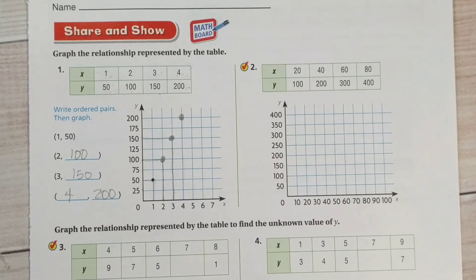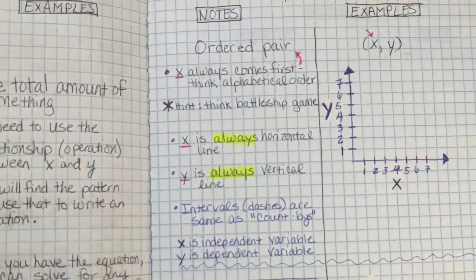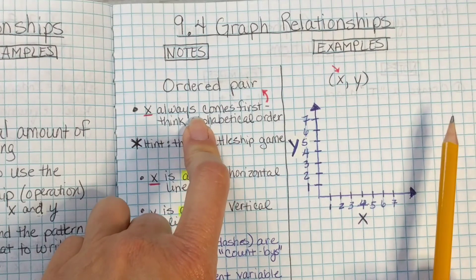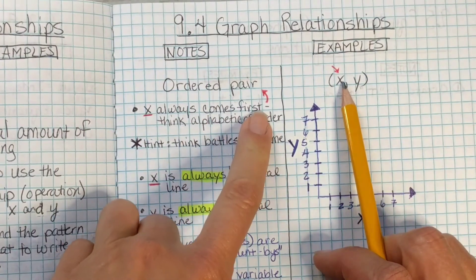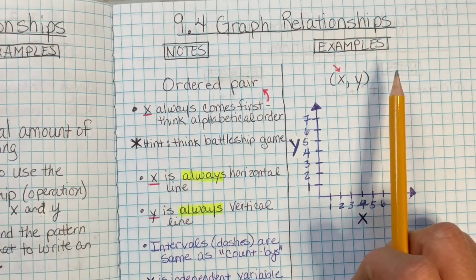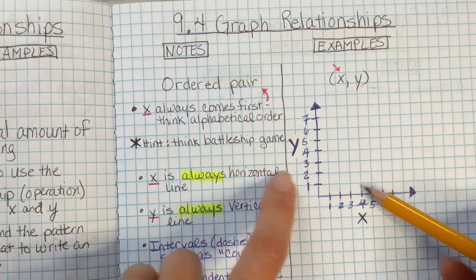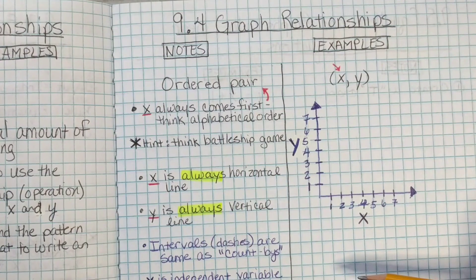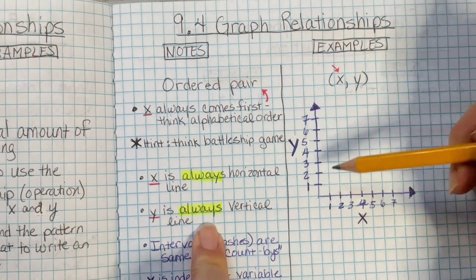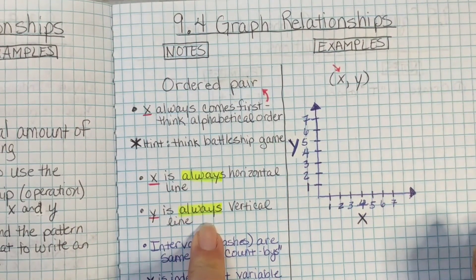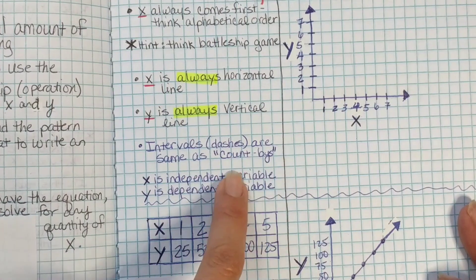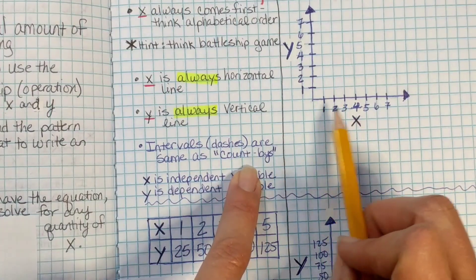Here we go. Graph relationships. An ordered pair: X always comes first, think alphabetical order. Y always comes second. Remember the battleship game. All you're doing with this lesson is finding the junction of two coordinates, just like the battleship game. X is always horizontal on the line. Y is always vertical on the graph. Intervals or dashes are the same as count-bys. So here our count-bys are just by 1.